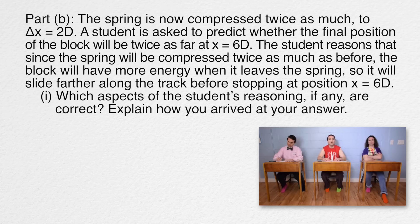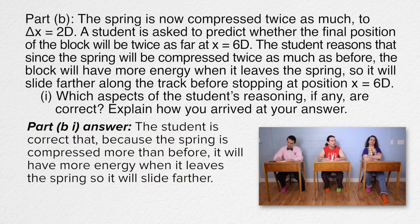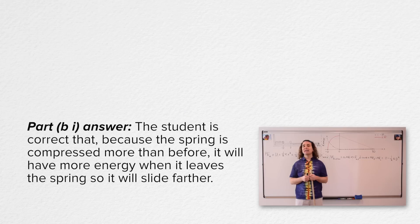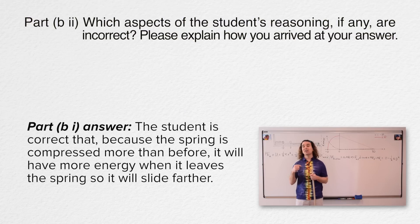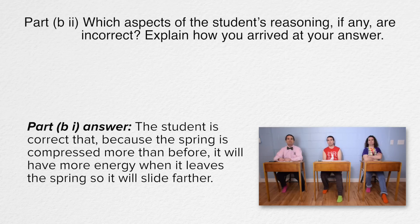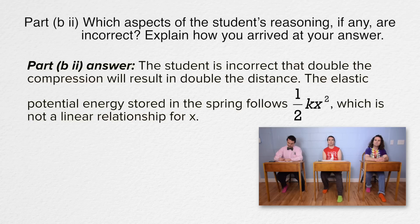The student is correct that because the spring is compressed more than before, it will have more energy when it leaves the spring so it will slide farther. That's it for the correct parts. For Part B-ii — which aspects are incorrect — the student is incorrect that double the compression will result in double the distance. The elastic potential energy stored in the spring follows one-half the spring constant times the displacement from equilibrium position squared, which is not a linear relationship for x.